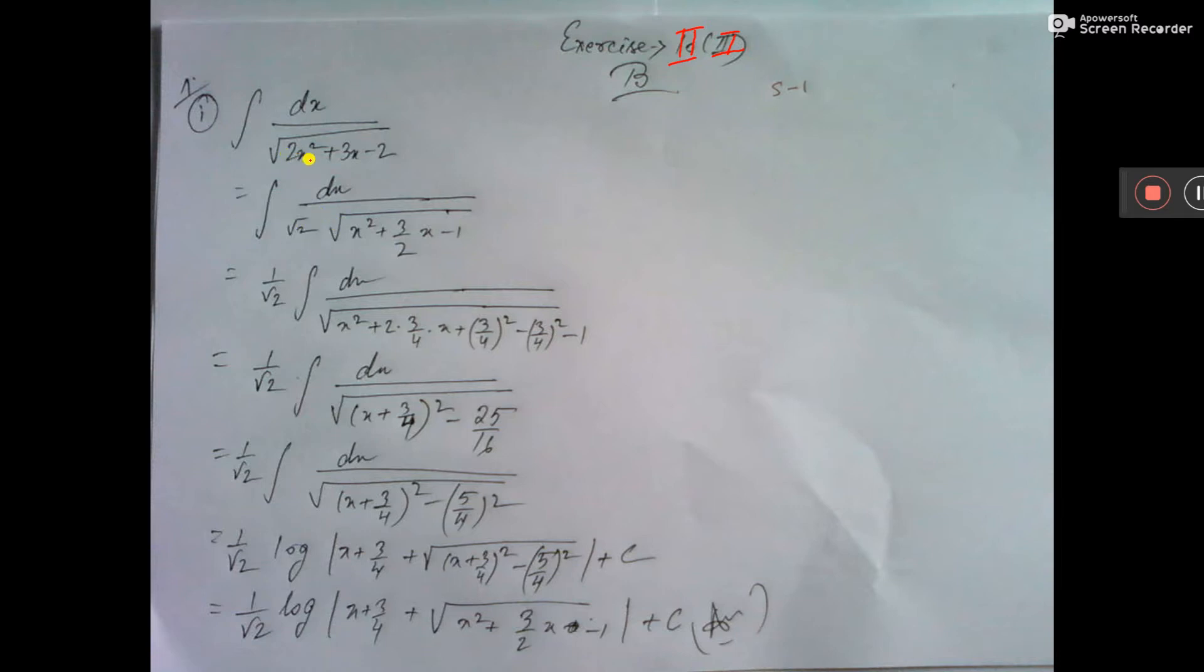then inside you're taking 2 common, so x squared is left. Here 2 is not there, so you have to divide by 2. Here 2 is there, taken common, so 1 is there. Now that root 2 is coming outside of the integration.